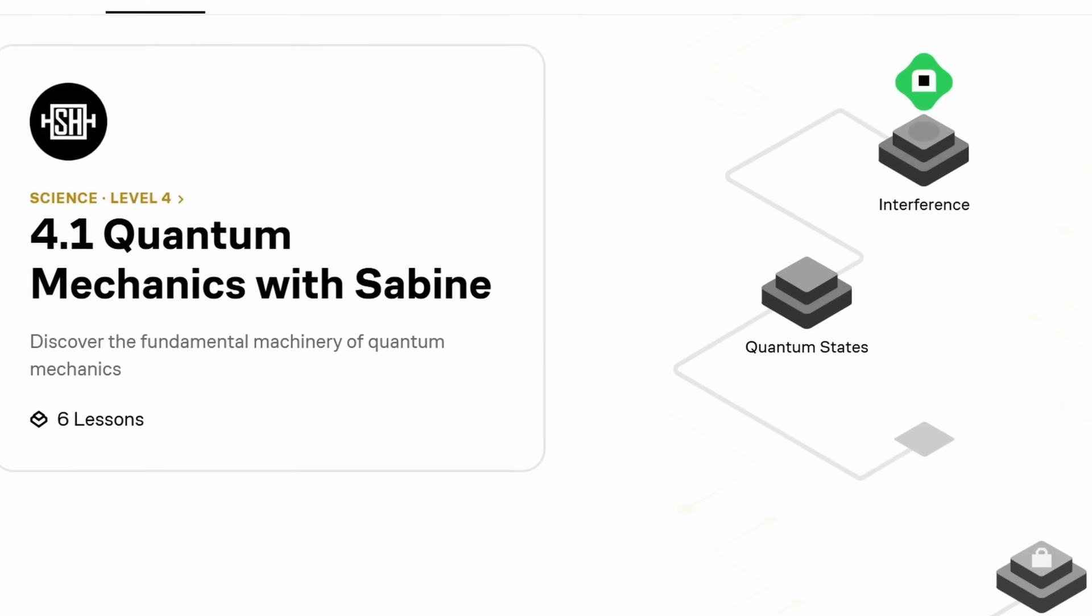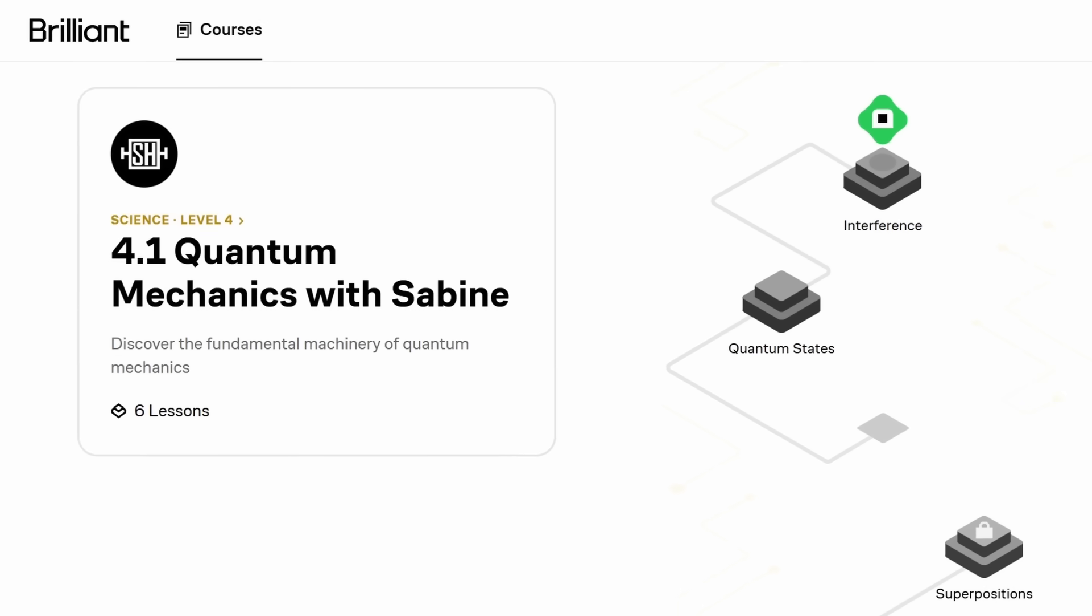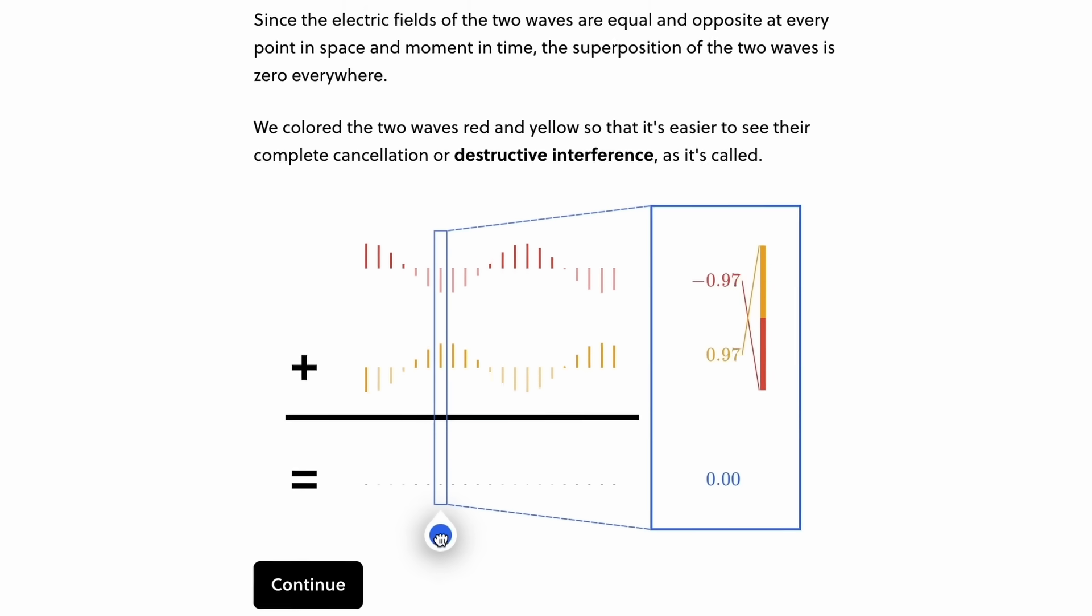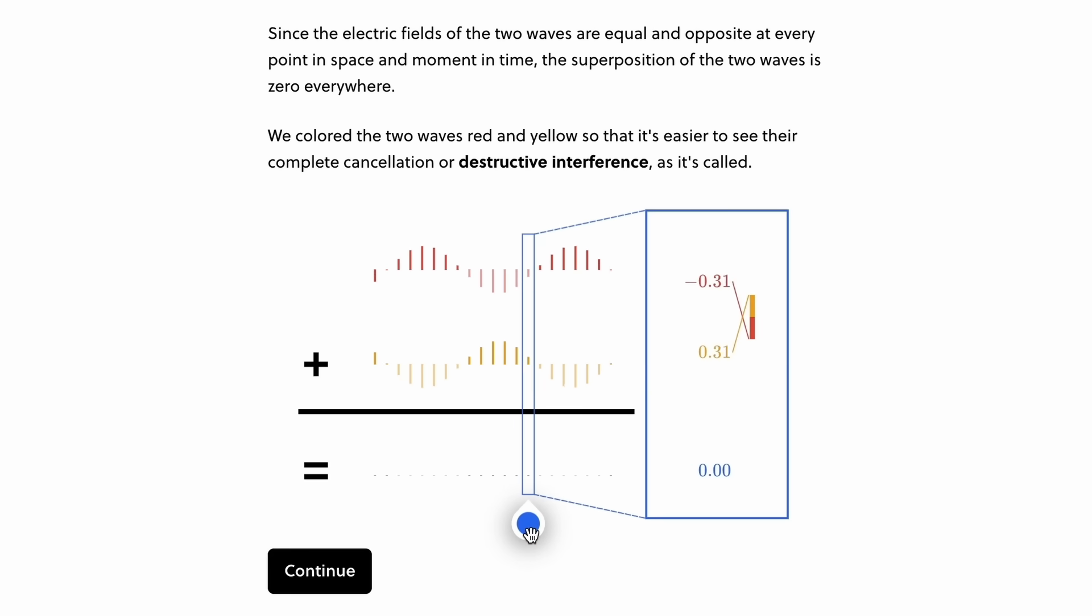And they're adding new courses each month. I even have my own course on Brilliant. That's an introduction to quantum mechanics. It'll help you understand what a wave function is and what the difference is between superpositions and entanglement. It also covers interference, the uncertainty principle, and Bell's theorem.